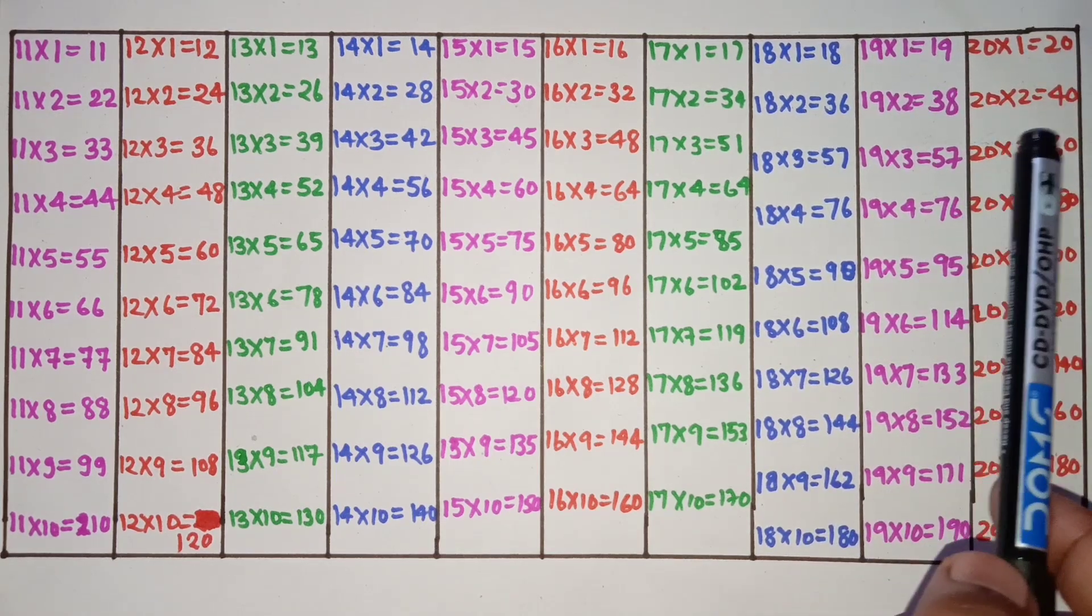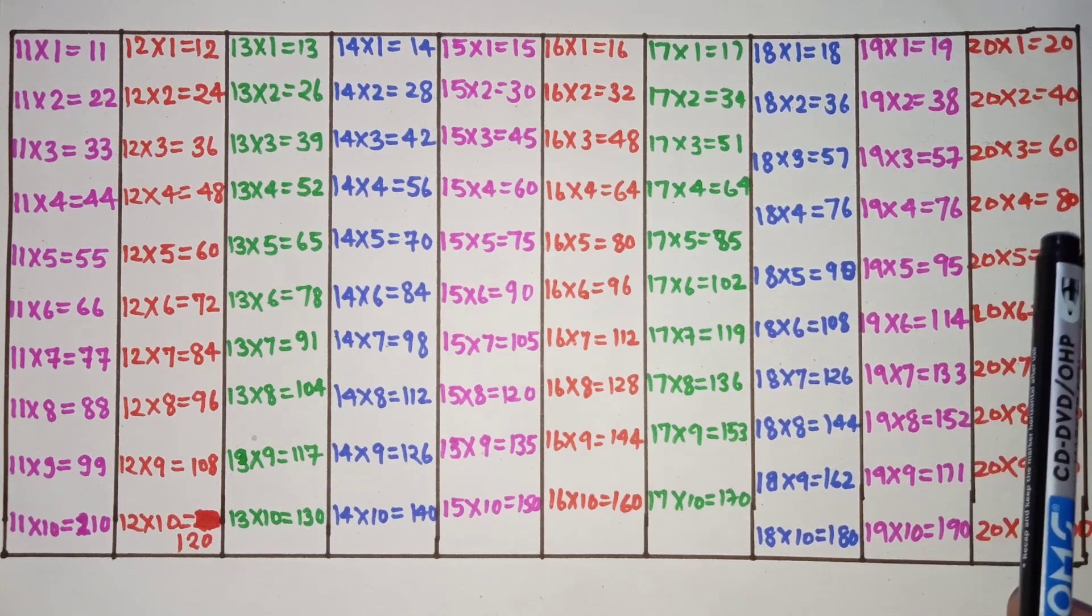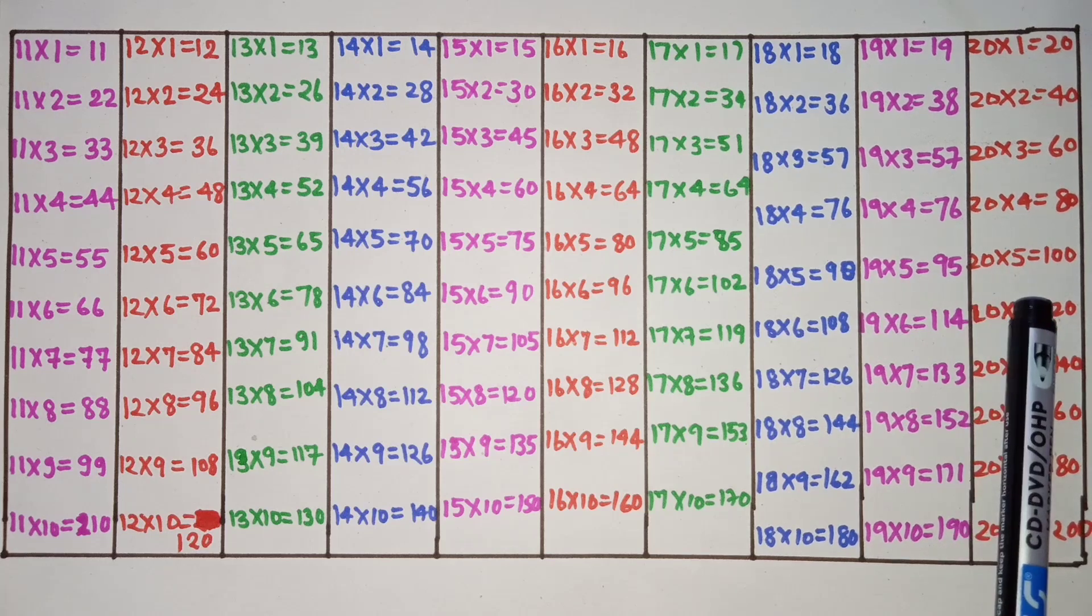20 ones are 20, 20 twos are 40, 20 threes are 60, 20 fours are 80.